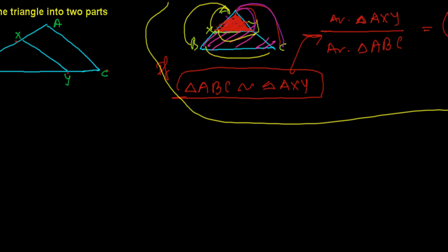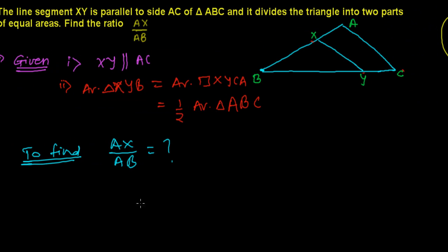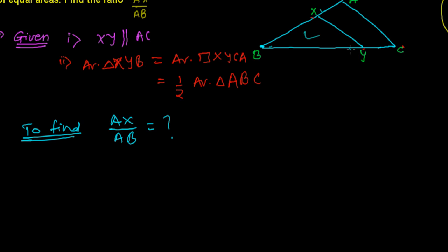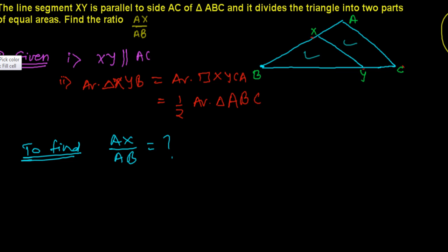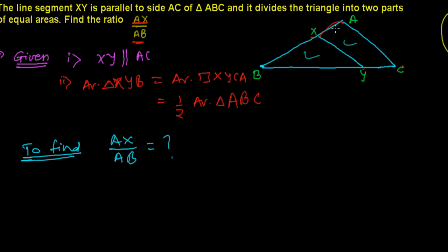I'm going to apply this same concept here. But before that, I need to prove whether triangle BXY and the bigger triangle ABC are similar or not. We need to prove that first. The reason is that the ratio we want is AX over AB, so if we can show the two triangles are similar, we can find BX over AB and convert BX into terms of AX.